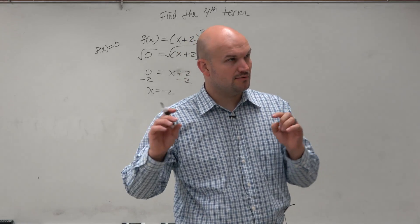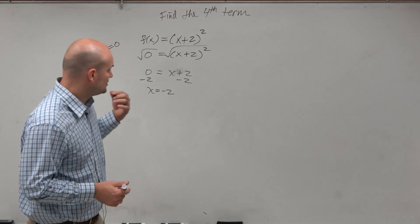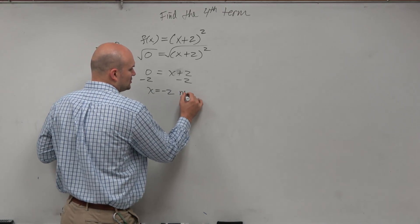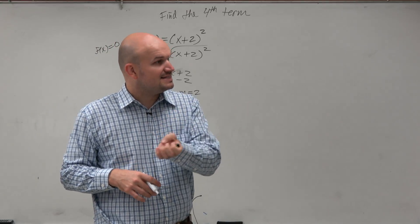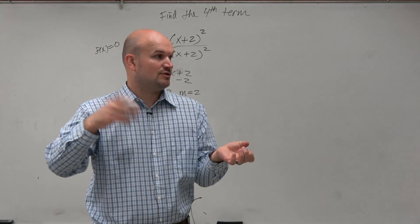But remember, what we kind of talked about was the other thing we talked about was multiplicity. This has a multiplicity equal to 2. What that means is, if you guys remember, that zero repeats. And what happens on the graph is that it bounces.